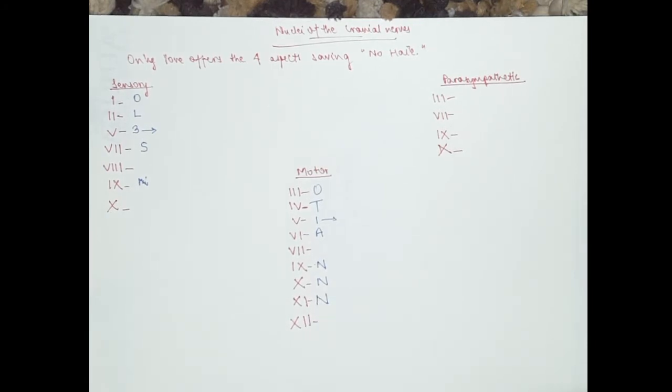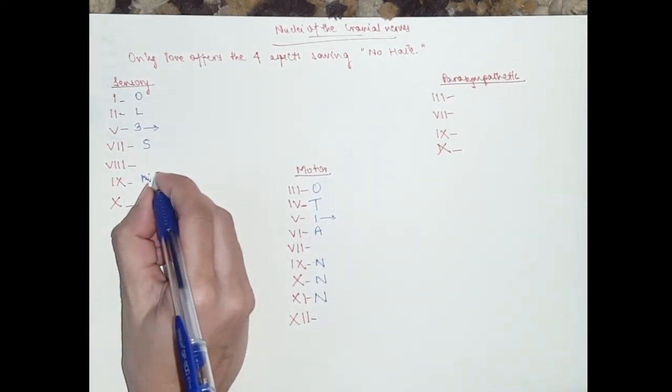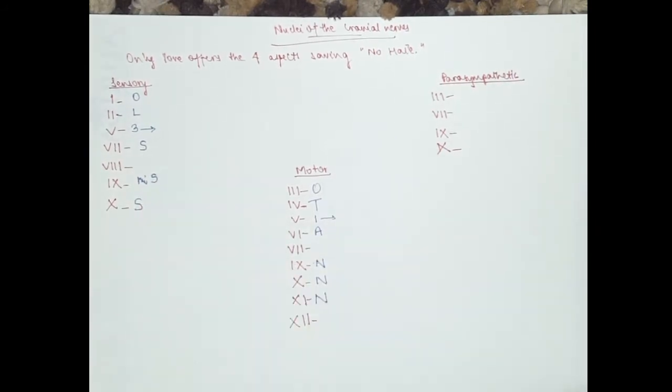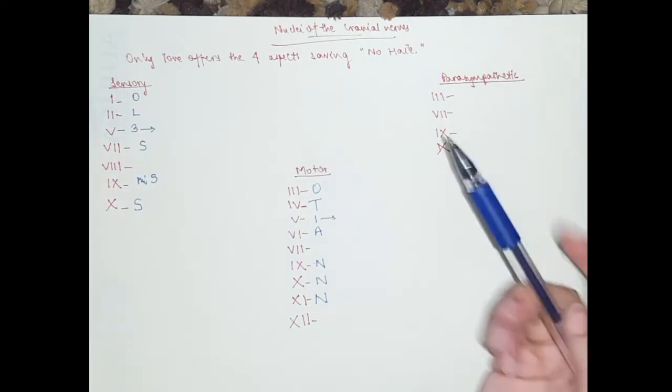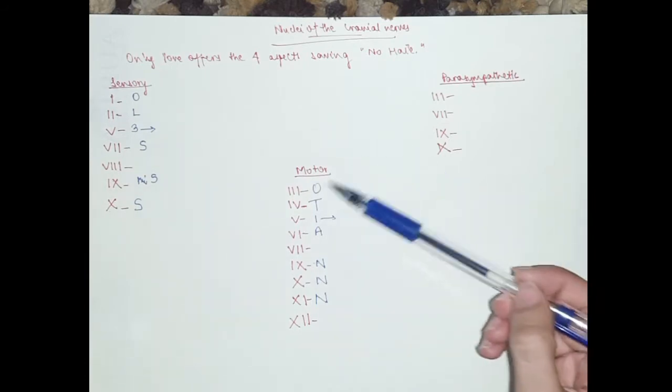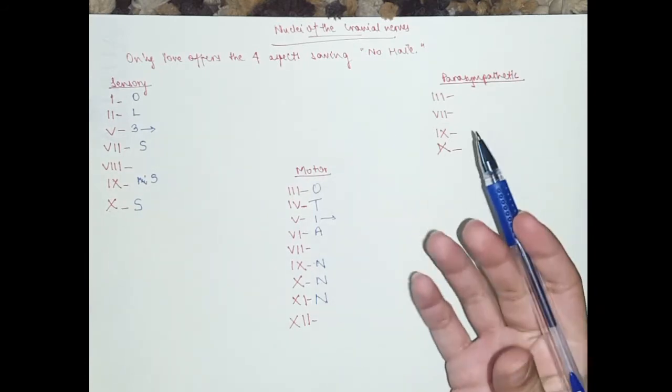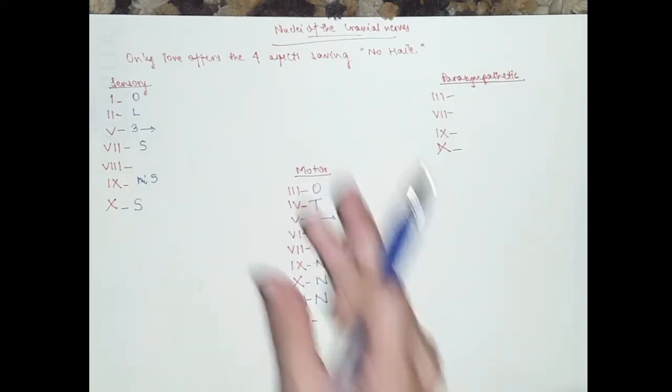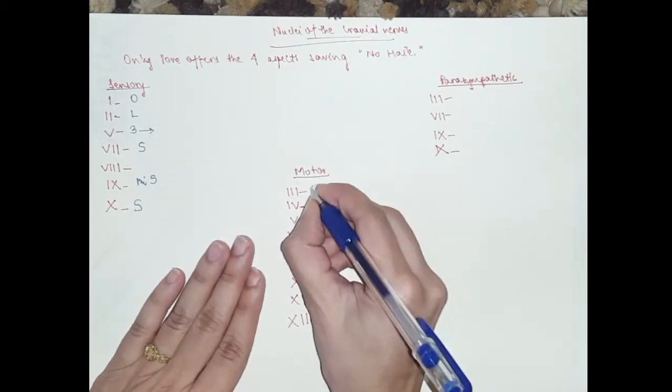So, one more thing, a clue would be something to remember: the motor nuclei usually take the names of the cranial nerves themselves. Okay? So let's start with motor, just to make it easier.